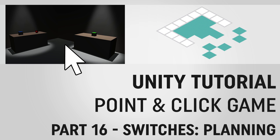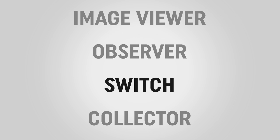Hey everyone, it's Ben from Bored to Bits, and this is part 16 of our Unity tutorial series on making a point-and-click adventure game. In this video we're going to start looking at switches, our third type of interactable that lets us affect other things inside of our game world.